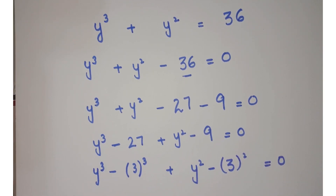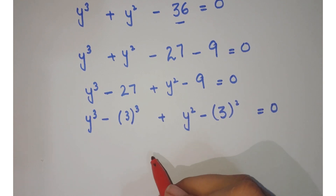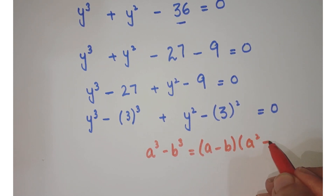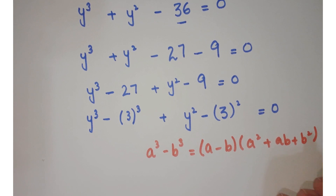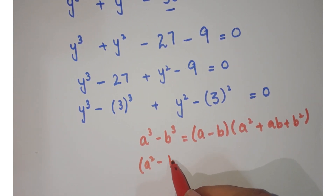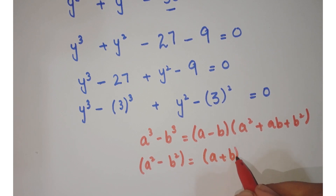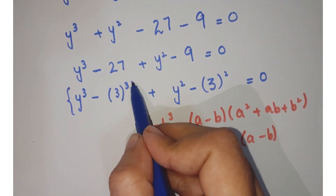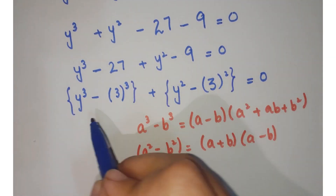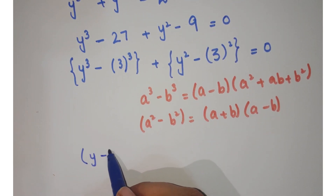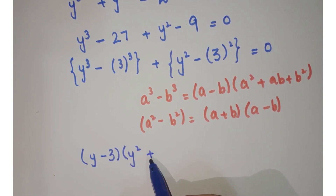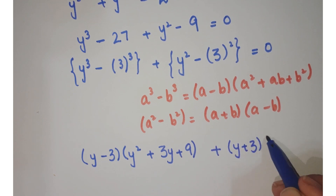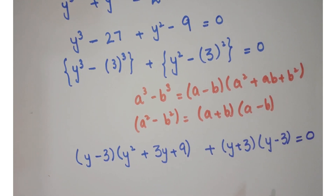Now we apply algebraic identities: a cubed minus b cubed equals (a minus b)(a squared plus ab plus b squared), and a squared minus b squared equals (a plus b)(a minus b). Applying these identities, we get (y minus 3)(y squared plus 3y plus 9) plus (y plus 3)(y minus 3) equals 0.